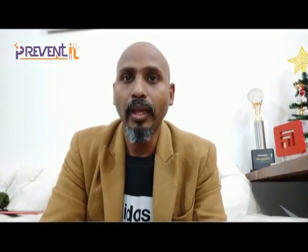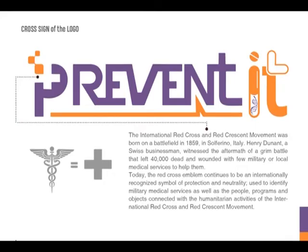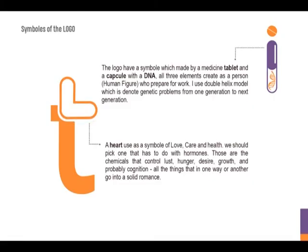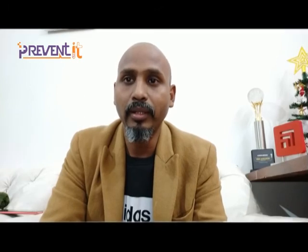This logo also has a red cross sign which expresses protection and neutrality. In the prevented logo, the letter I is made as a capsule and medicine with DNA, and the letter T is made as a heart, which expresses love, care and health.